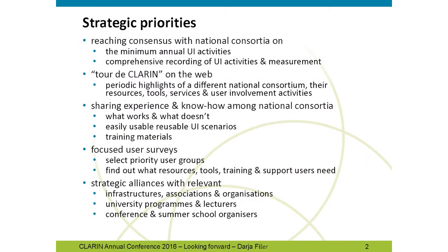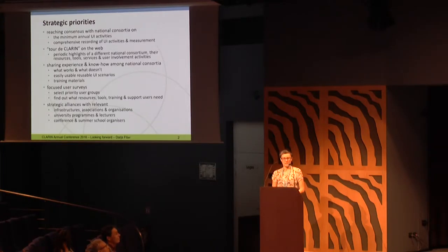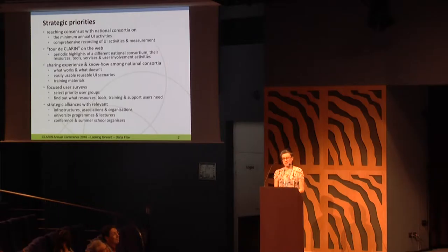First of all, I would like to reach a consensus with the National Consortium on what the minimum annual user involvement activities are and what they should be, so that everyone is on board and takes these into account. Then I would like to reach a consensus on how to comprehensively record all the activities and how to measure user involvement at the national level. And then I would like to promote these activities, because I think there's a lot going on and we should be proud of all this. On the website I would like to introduce a tour declaring,